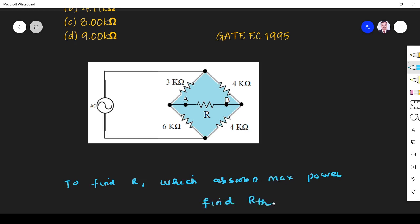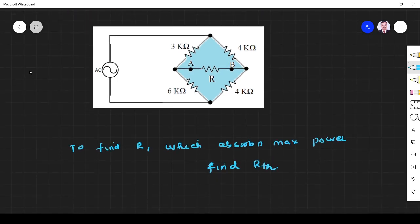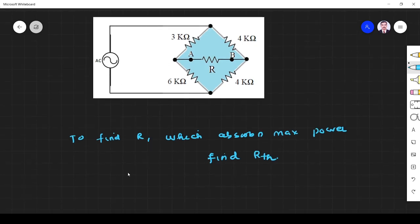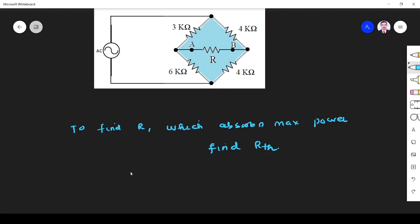So in order to find R Thevenin, what I have to do? I have to remove this resistor. If there is any source, voltage source means short it, current source means open it. So this is voltage source, so short it. This resistor we have to remove it, so the circuit will be like this.